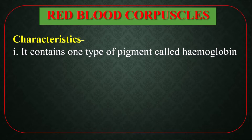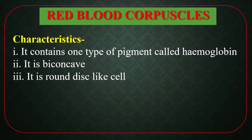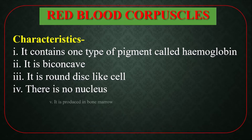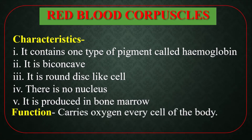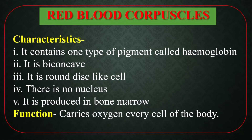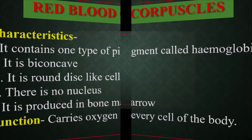The color of hemoglobin is red, which is why the presence of hemoglobin makes the total blood red. RBC is biconcave and disc-like in shape. There is no nucleus. It is produced in bone marrow. Bone marrow is the fluid substance present in the hollow space of bone. The main function of RBC is to carry oxygen to every cell of the body.